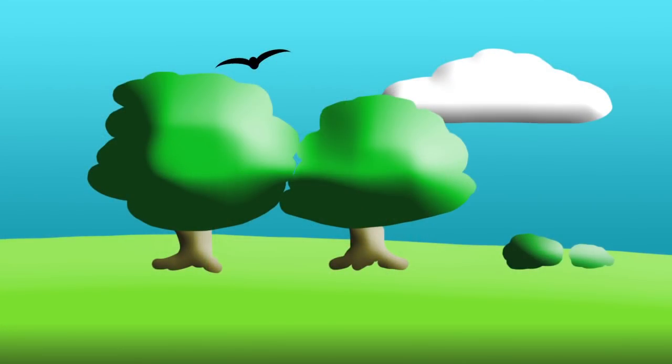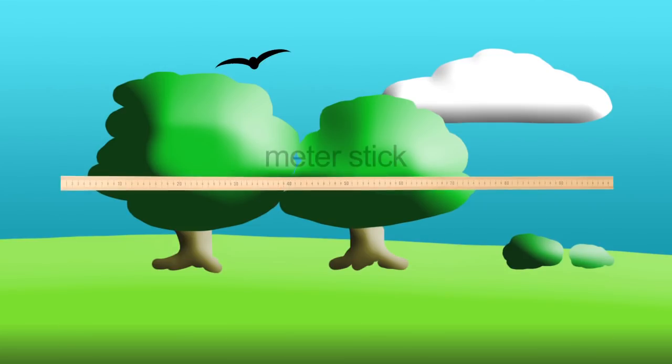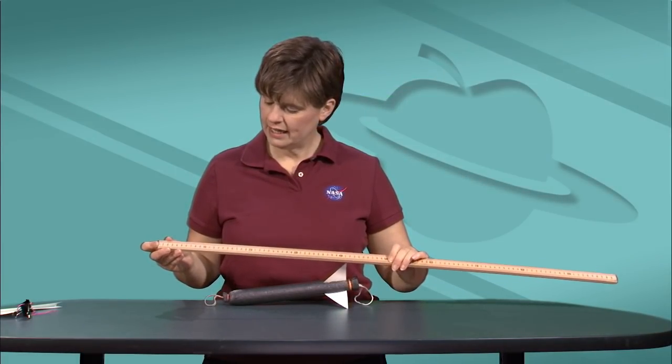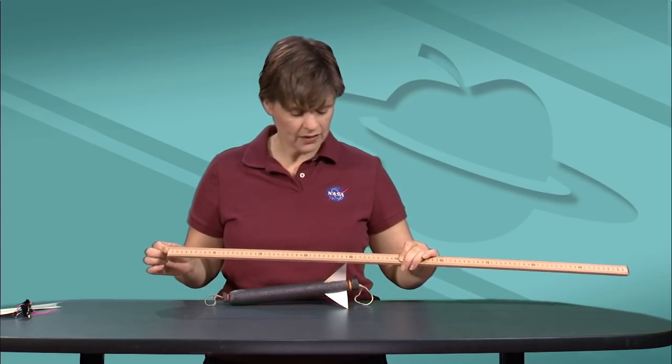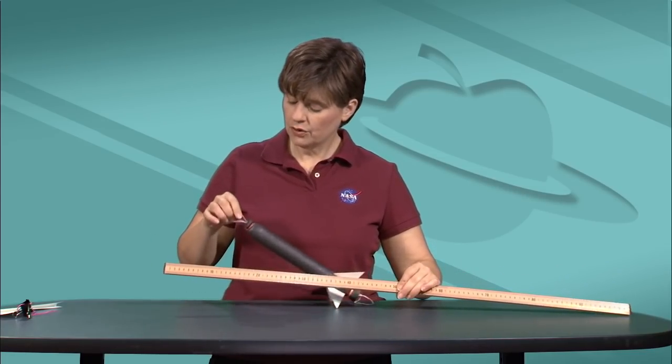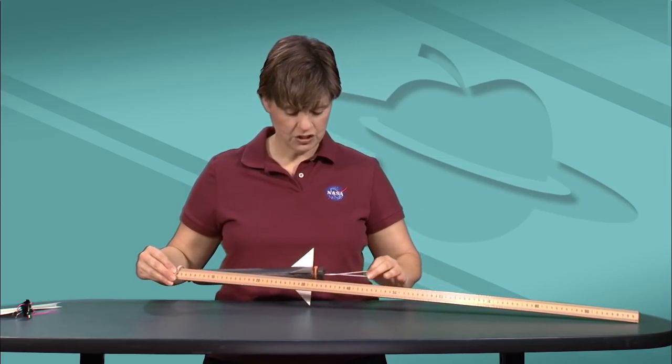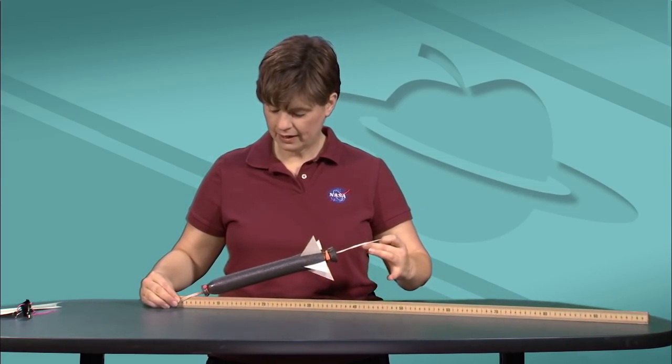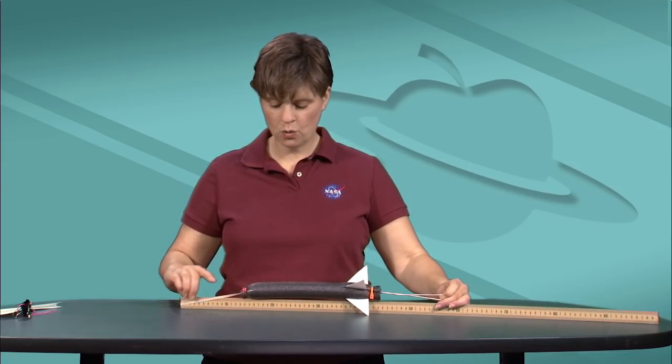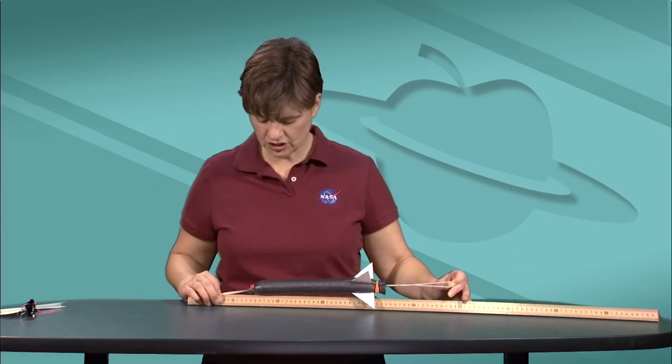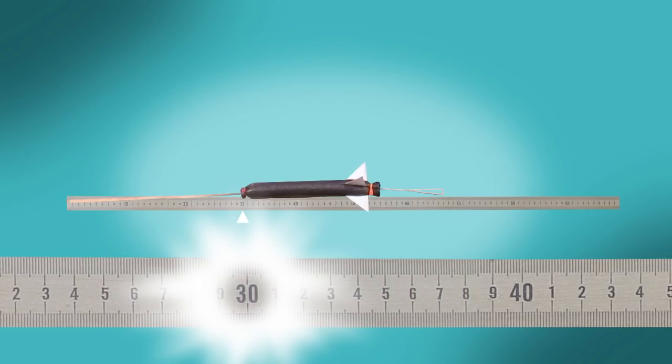We're going to go outside and launch the rocket off of a meter stick. Before we go though, we need to prepare our meter stick. It's important that you realize how this will be launched. The rubber band is going to attach to the end of the meter stick, and then you will be pulling back and measuring where the nose is on the meter stick. So it's important that the rubber band is at the zero end and we'll actually be pulling it back all the way to 30 centimeters.